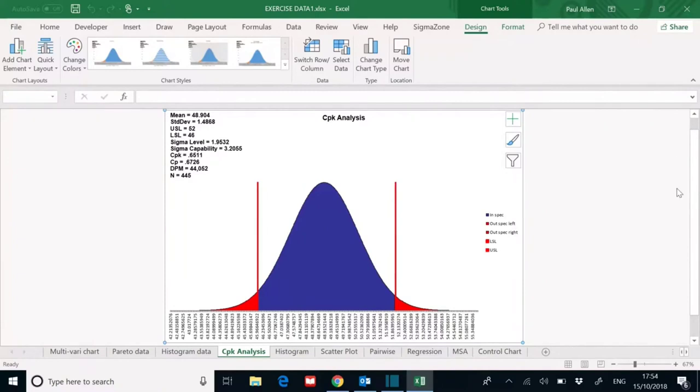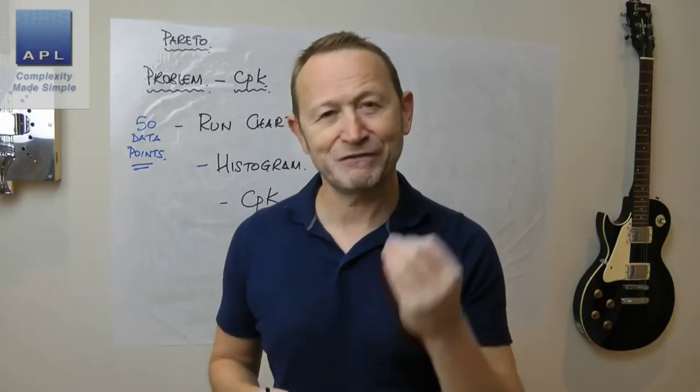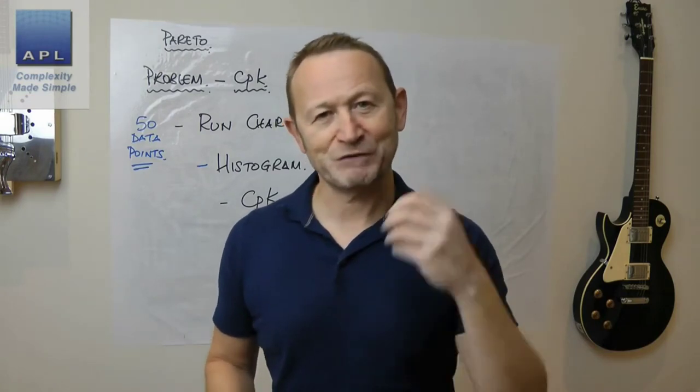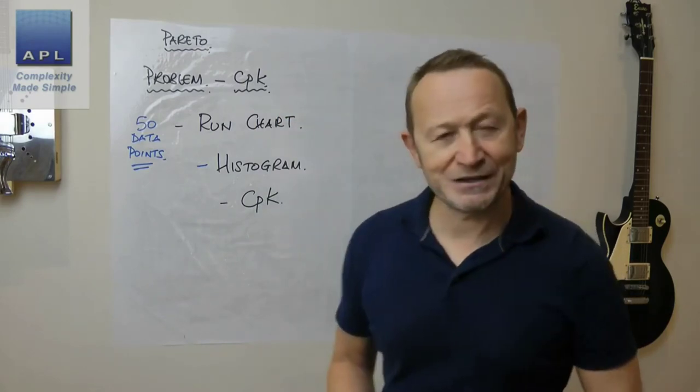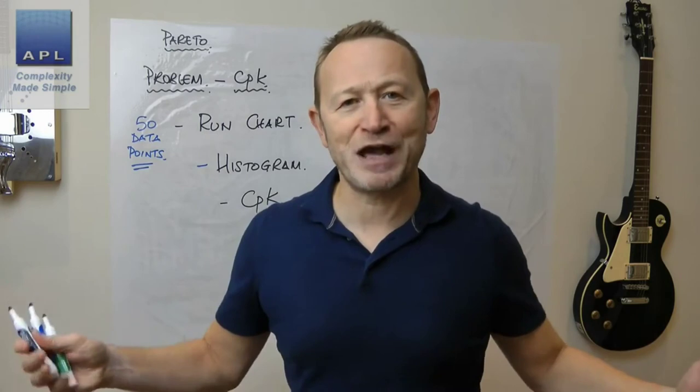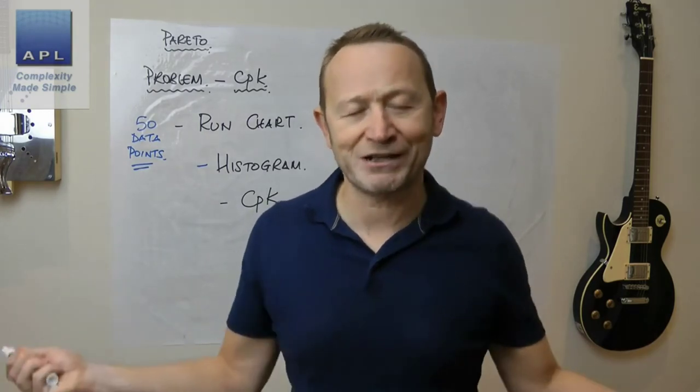That's a prediction, not an observed value. Because I know the normal distribution is strong in the data from the histogram, I know that prediction is going to be very good. So we've gone run chart, histogram, CPK.